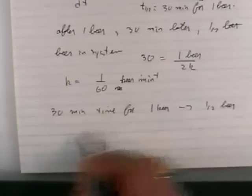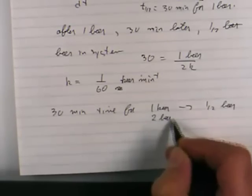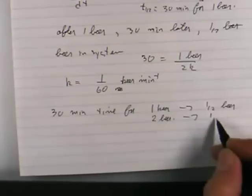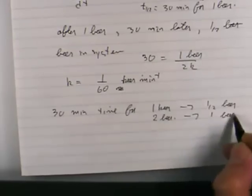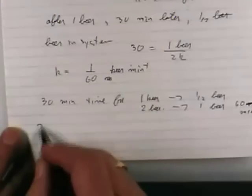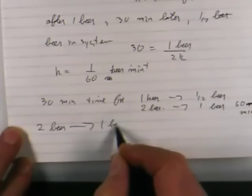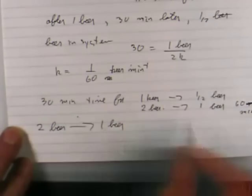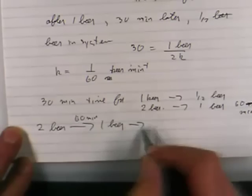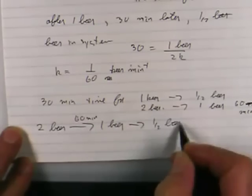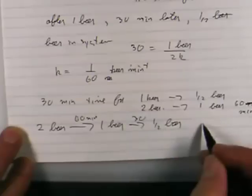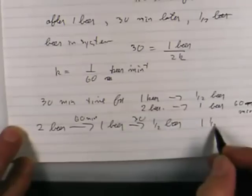What about two beers? Two beers goes to one beer in sixty minutes. And then, so if I have two beer, I go to one beer in sixty minutes. And then, I go to half a beer in thirty minutes. So it takes one and a half hours.